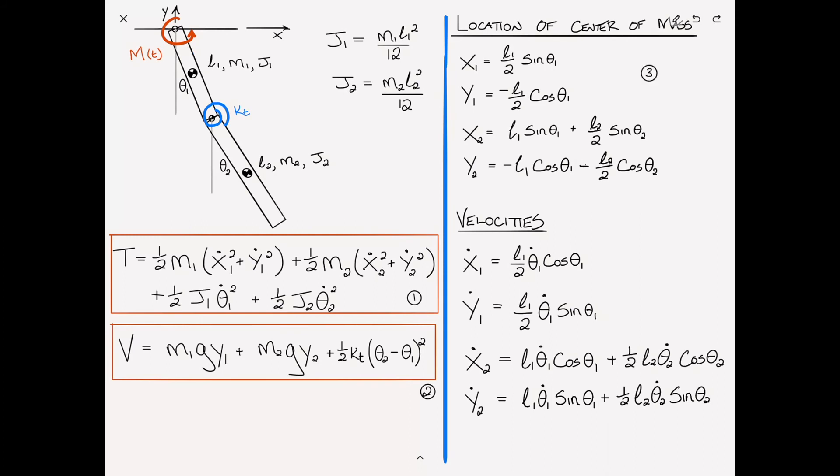Really we're done at this point. I'm going to leave it as an exercise to you to substitute these velocities and these positions into T and V and then crank it through Lagrange's equations and come up with the equations of motion. It's really just a little bit of tedious algebra. I should also mention that the external moment here will appear in the first equation of motion, the equation for theta 1 on the right hand side. It will be the forcing function for that equation.